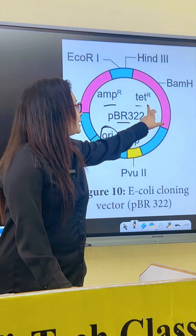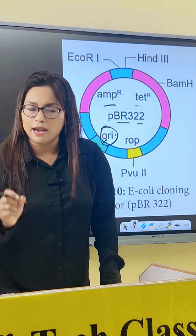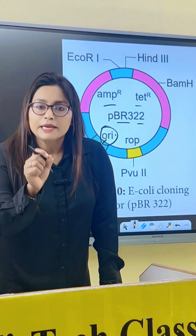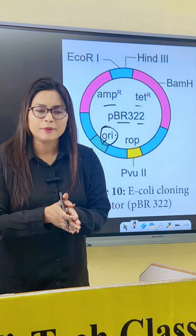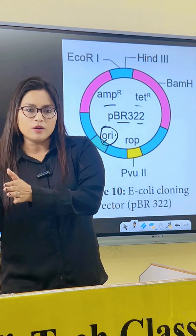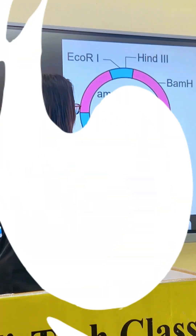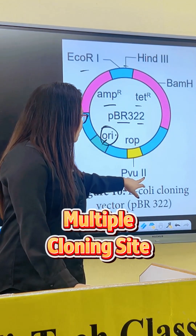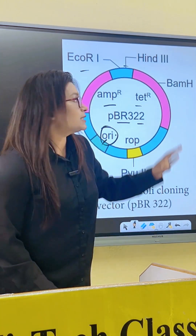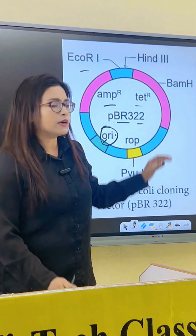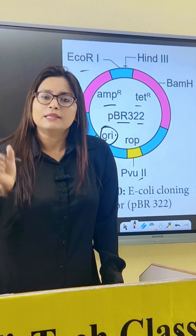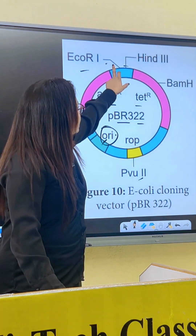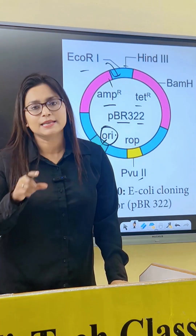The antibiotic resistance genes are for ampicillin and tetracycline. These are helpful for cloning purposes as they differentiate between recombinant and non-recombinant DNA. The next feature is the multiple cloning site — this is the specific recognition site where foreign DNA gets inserted, and it is used for cloning.